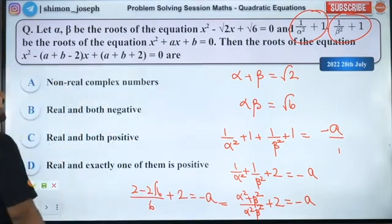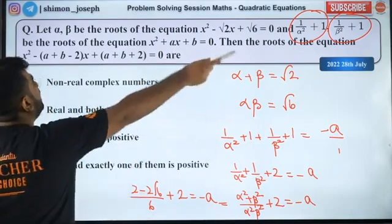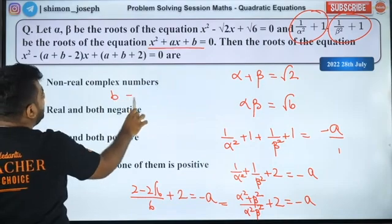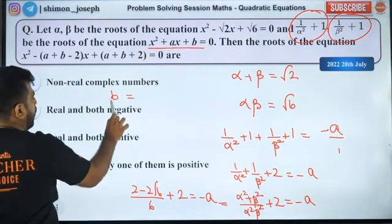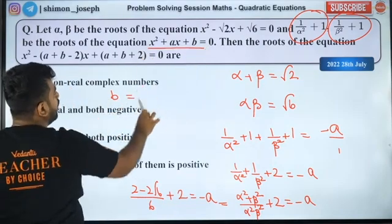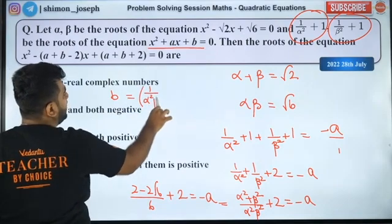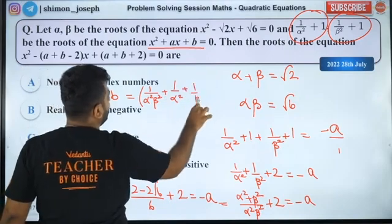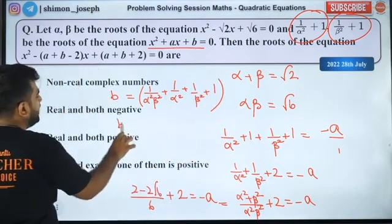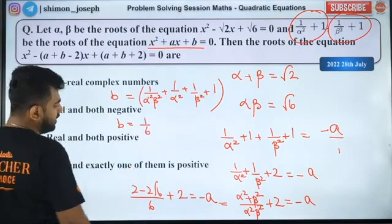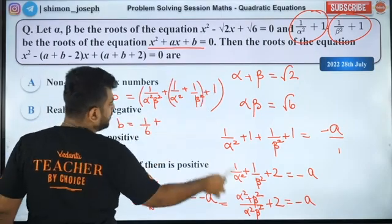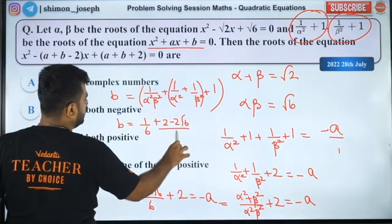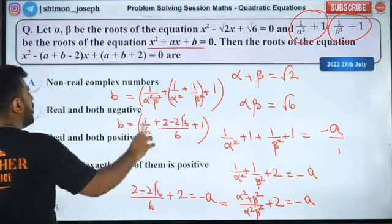Now let's go to b. What is b? Sir, b means product of the roots, why? In this equation, product of the roots is B by A, B by 1. What is product of the roots? 1 by α²β² plus 1 by α² plus 1 by β² plus 1. So this is B. So B is equal to 1 by 6 plus 1 by α² plus 1 by β². So this is your B.